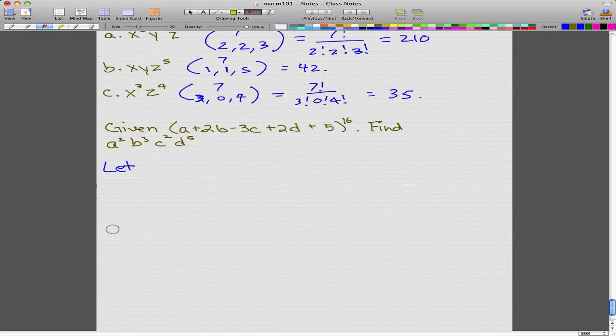Like I said in the last video, I mentioned that you should use a let statement, and that's what we'll do first. So let v equals a, let w equal 2b, let x equal negative 3c, let y equal 2d, and let z equal 5.